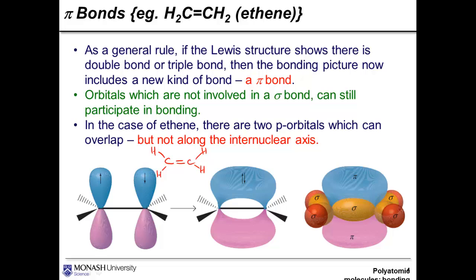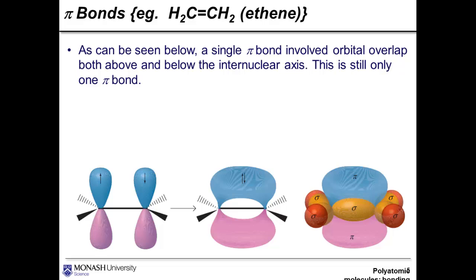As you can see, between the two carbon atoms there's a double bond. This is actually made of one sigma bond, but then there's a remaining combination of two p atomic orbitals which can overlap like this to form a new kind of bond, a pi bond. You'll notice in this diagram over here the pi symbol is given here, but it's also given here. The blue and pink region in this diagram represent one pi bond, not two. You'll see an example of a triple bond during the lecture slides on this topic. So this can be seen below: a single pi bond involved orbital overlap, both above and below the internuclear axis. And as I say, this is still just one pi bond.